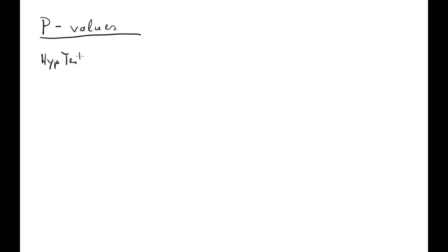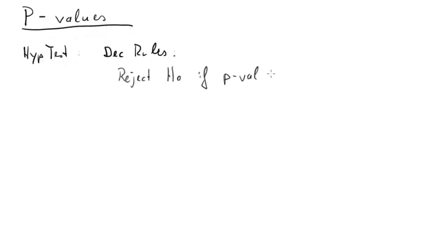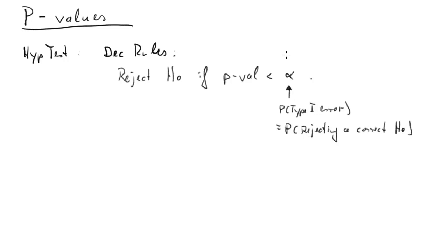We'll do this in a regression framework. The decision rule when using p-values is always the same: reject H0 if the p-value is smaller than alpha. Alpha is the probability of a type 1 error — the probability of rejecting a correct null hypothesis. You still need to set alpha; often we set it to five percent, but you may have reasons to reduce it to one percent or even a tenth of a percent.